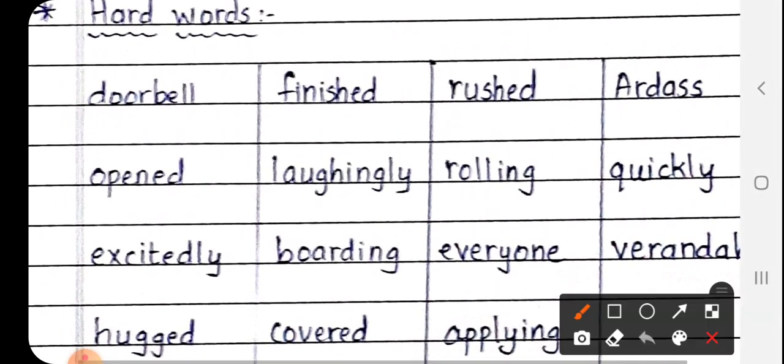Doorbell, D-O-O-R-B-E-L-L. Doorbell means Garvaji ki ganti. Opened, O-P-E-N-E-D. Opened means Khul gaya.